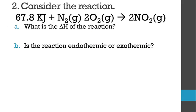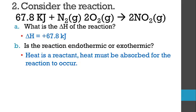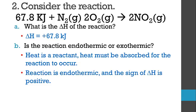The next question has a chemical equation with heat as a reactant — the reaction between nitrogen and oxygen. The delta H is 67.8 kilojoules. Since heat is a reactant, just like any other reactant, we need enough of it for the reaction to occur. Heat is being absorbed for this reaction to happen, meaning the reaction is endothermic. So the sign on delta H will be positive: positive 67.8 kilojoules.